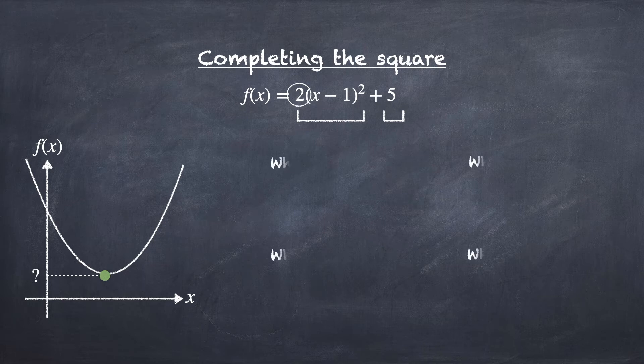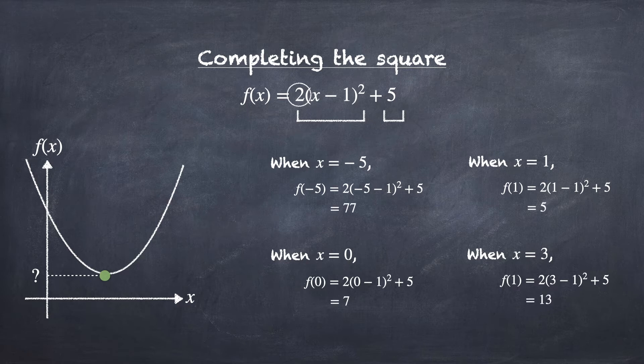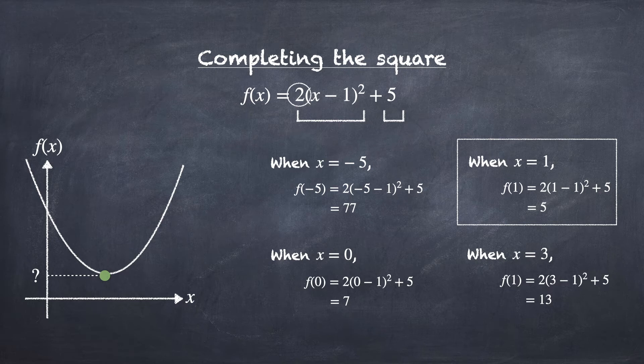If we try to substitute different x into the function, we will get different values of y. In these four examples, the minimum value happens to be 5 when x equal to 1. But, how do we know if there is any other x that can give us a value that is less than 5?